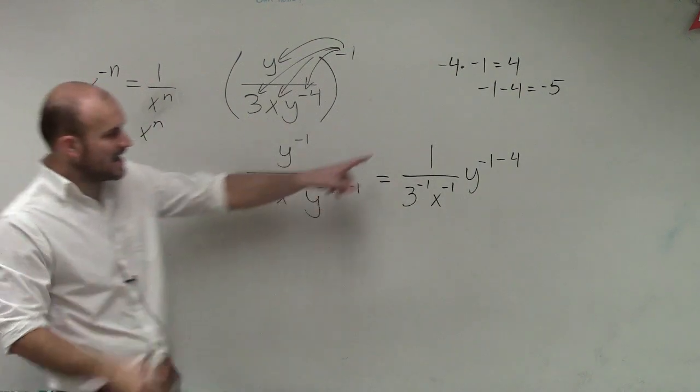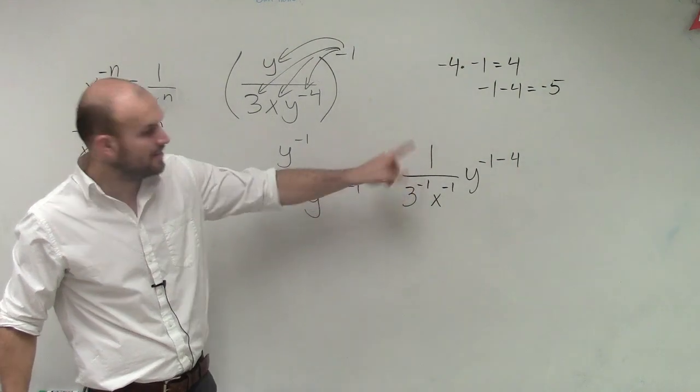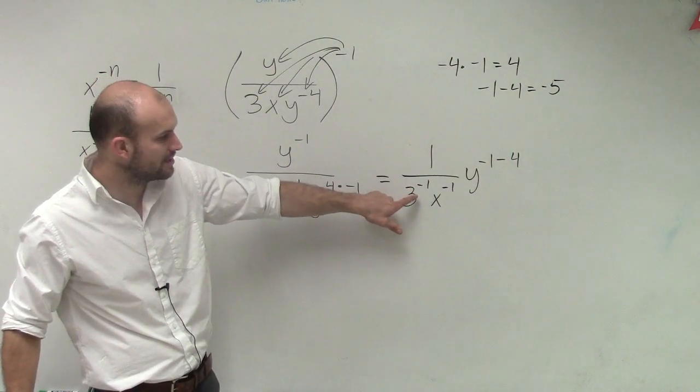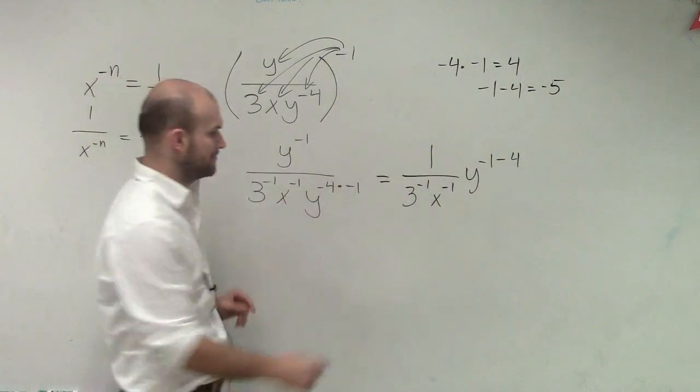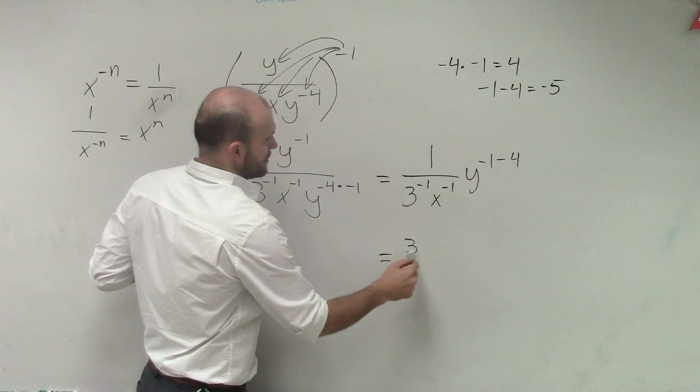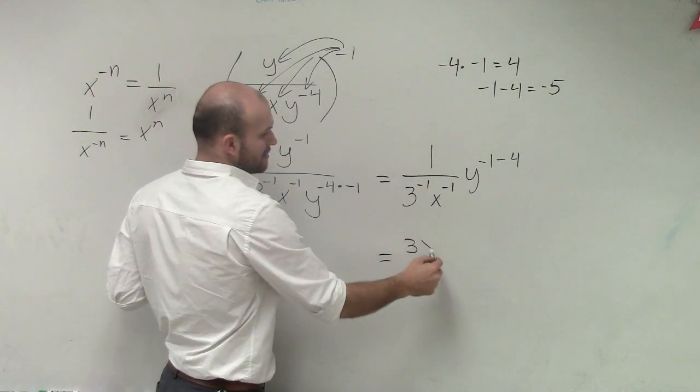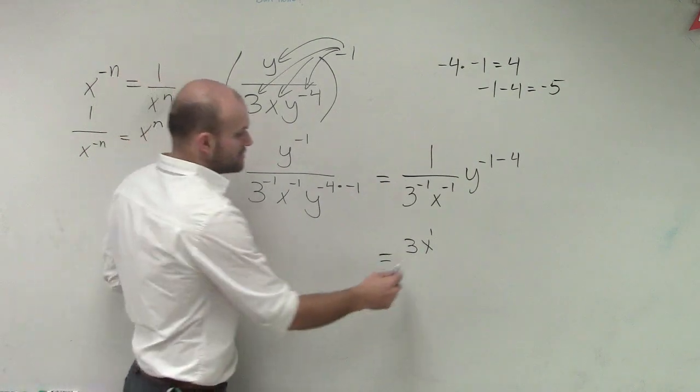So look it. I have a 1 divided by 3 to the negative first power. That means my 3 to the negative first power needs to go in the numerator. My x to the negative first power needs to go in the numerator as well.